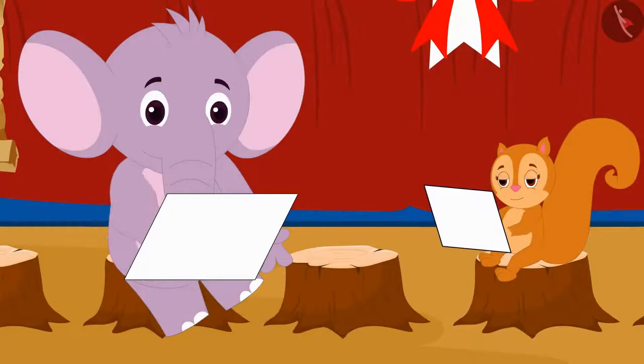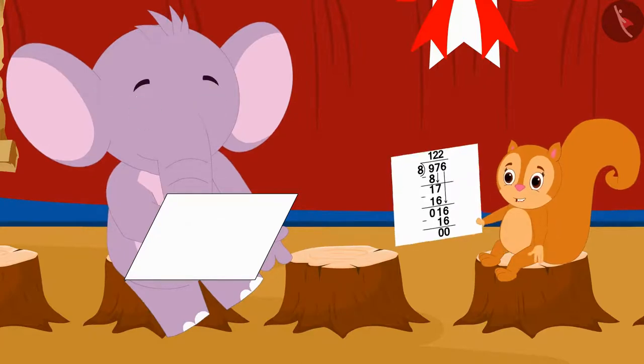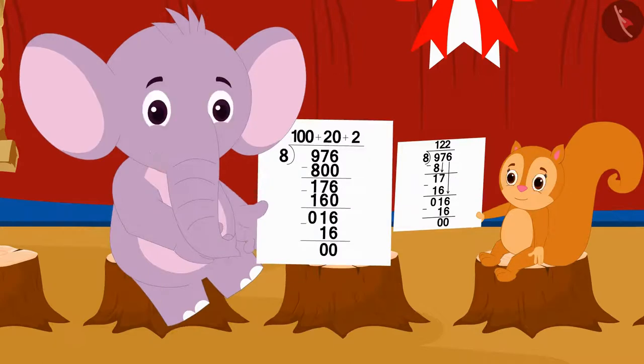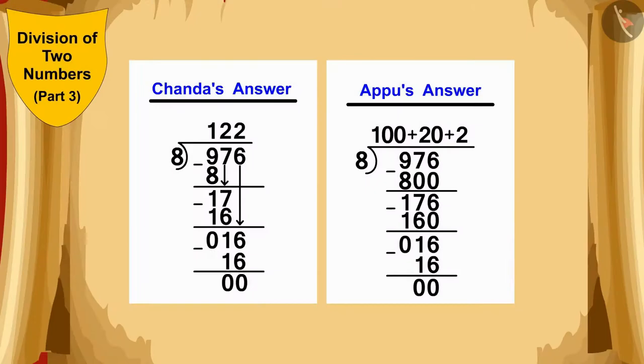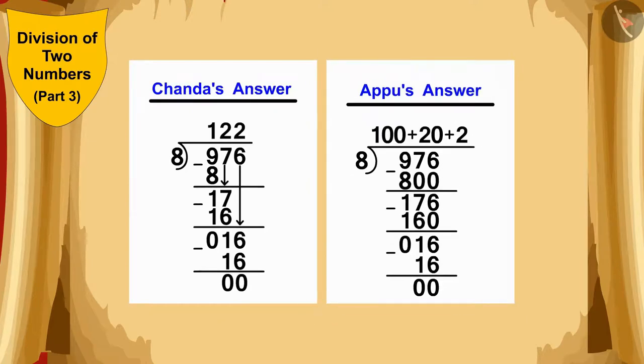Both Chanda and Appu started looking for answers to 976 divided by 8. I found the answer, Appu. See this, Chanda told Appu. I also found the answer, Chanda. Appu showed his paper to Chanda. What is this? Both Chanda and Appu have used division in different ways. Let us see if the answer from both their division methods is same.